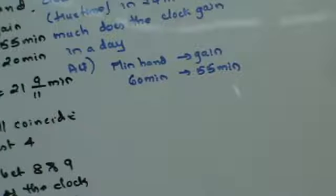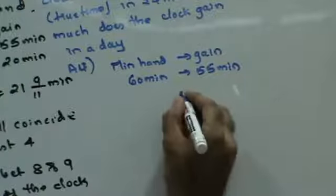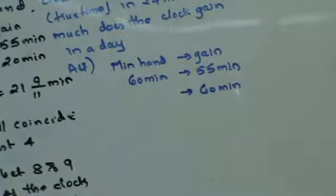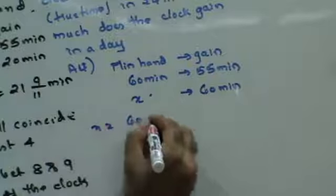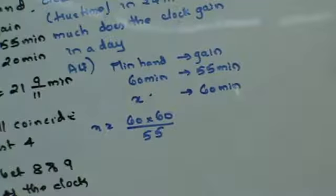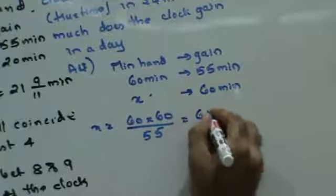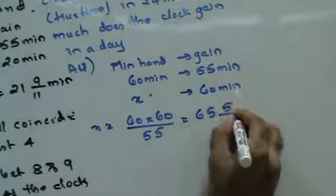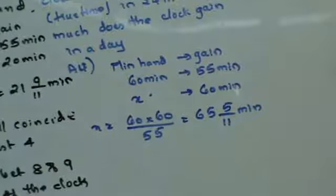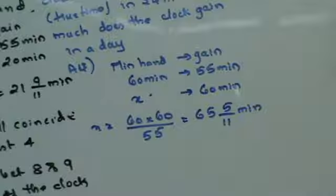For the minute hand to gain 60 minutes, the time covered is 60 × 60/55 = 65 5/11 minutes. So in a correct clock, the hands coincide every 65 5/11 minutes. For every one hour, the minute hand gains 65 5/11 minutes on the hour hand.